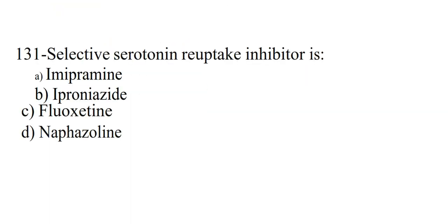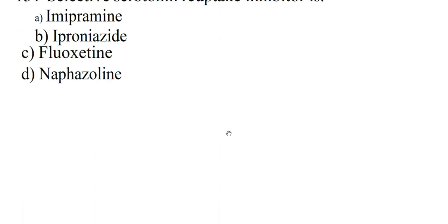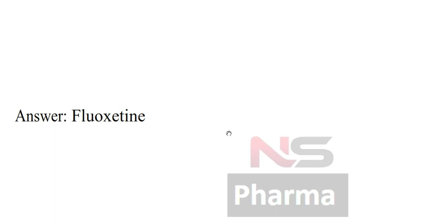Next question. Selective serotonin reuptake inhibitor is: Option A Imipramine, Option B Iproniazid, Option C Fluoxetine, Option D Naphazoline. Answer: Fluoxetine.